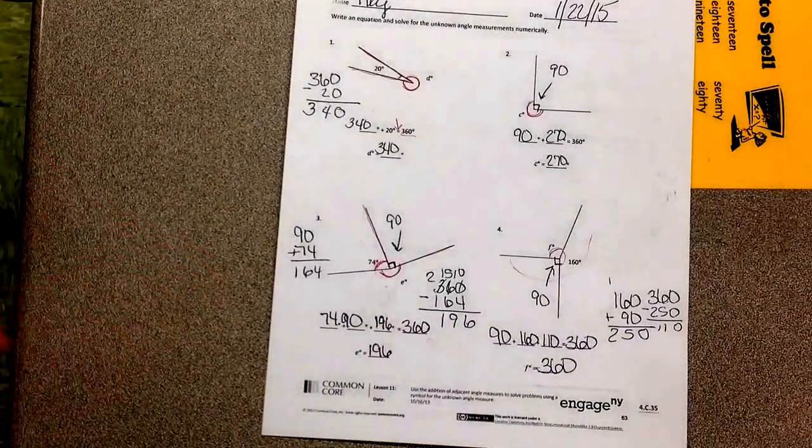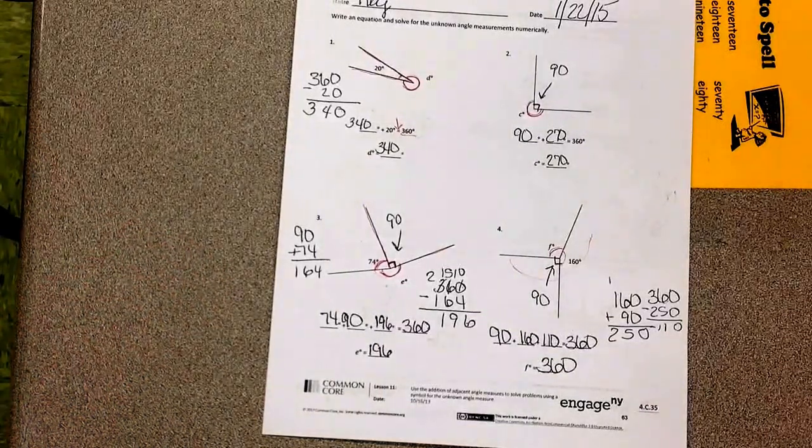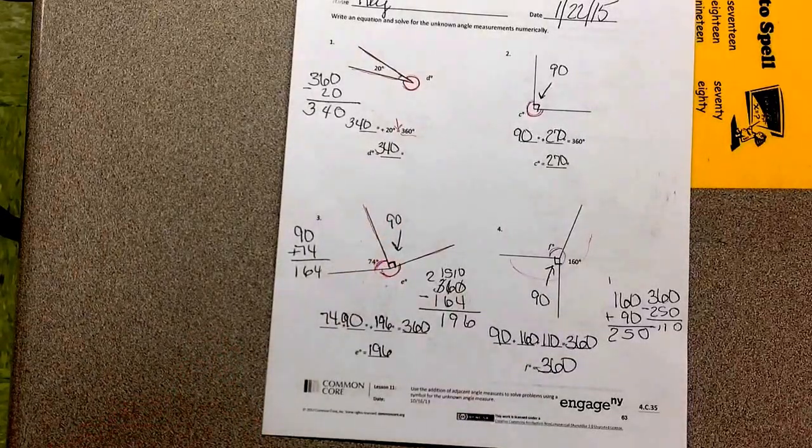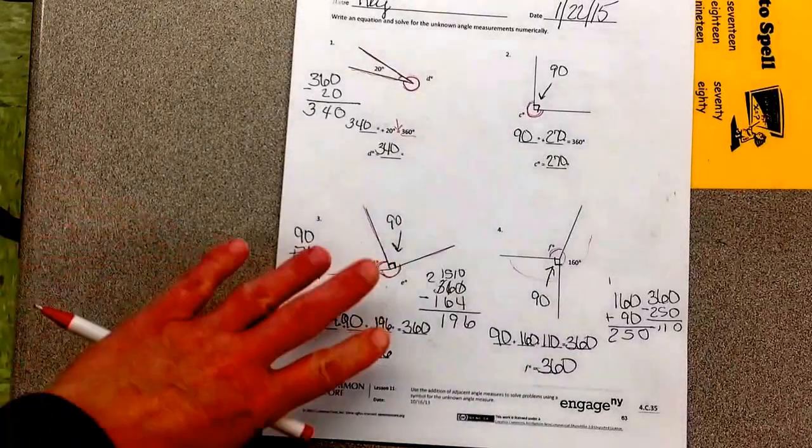Okay. On the exit ticket, make sure you label what you know. Notice when I saw right angle, I was labeling it 90. I was trying to label everything I could.